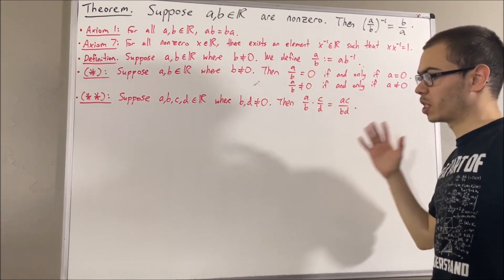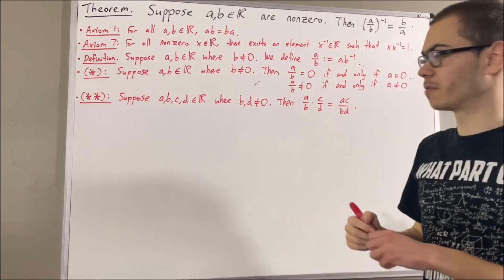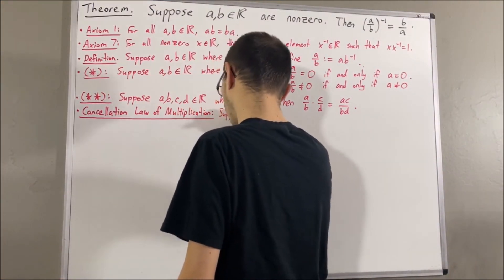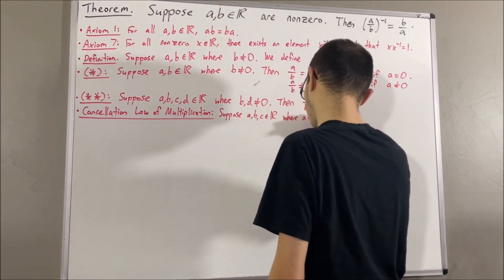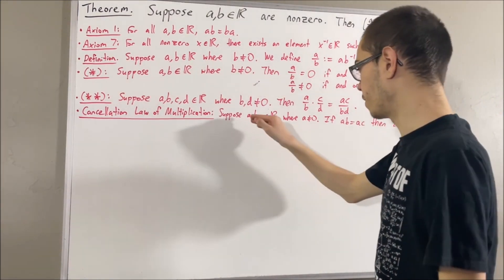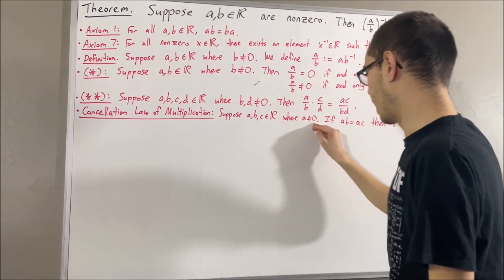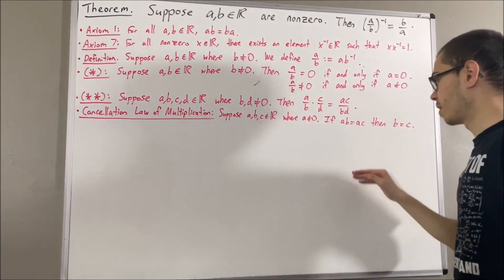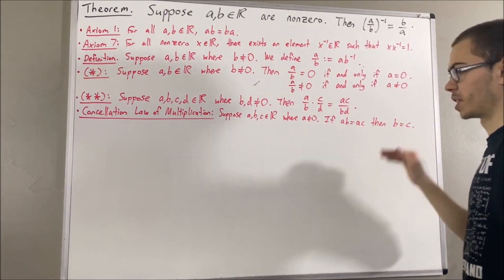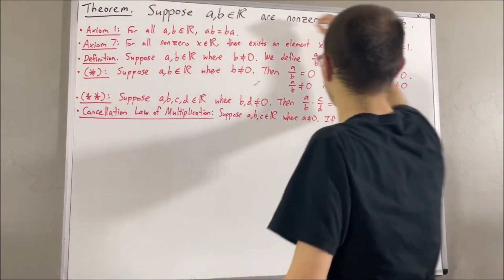And the other preliminary result we're going to use is the cancellation law of multiplication. It says: if we are given real numbers A, B, and C where A is not equal to zero, then if AB is equal to AC, then B is equal to C. Okay, so now let's get into proving this theorem.